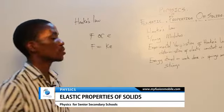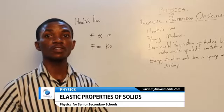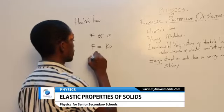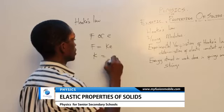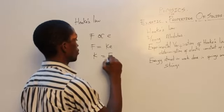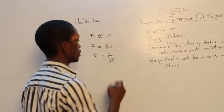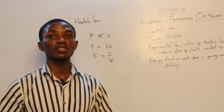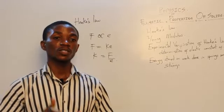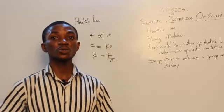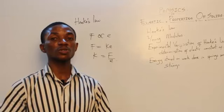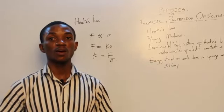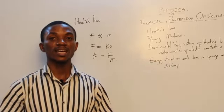KE represents the stiffness of the spring. We can say the stiffness of the spring is given as F over E. This stiffness of the spring controls the chances of the spring returning back to its original state when it is extended.